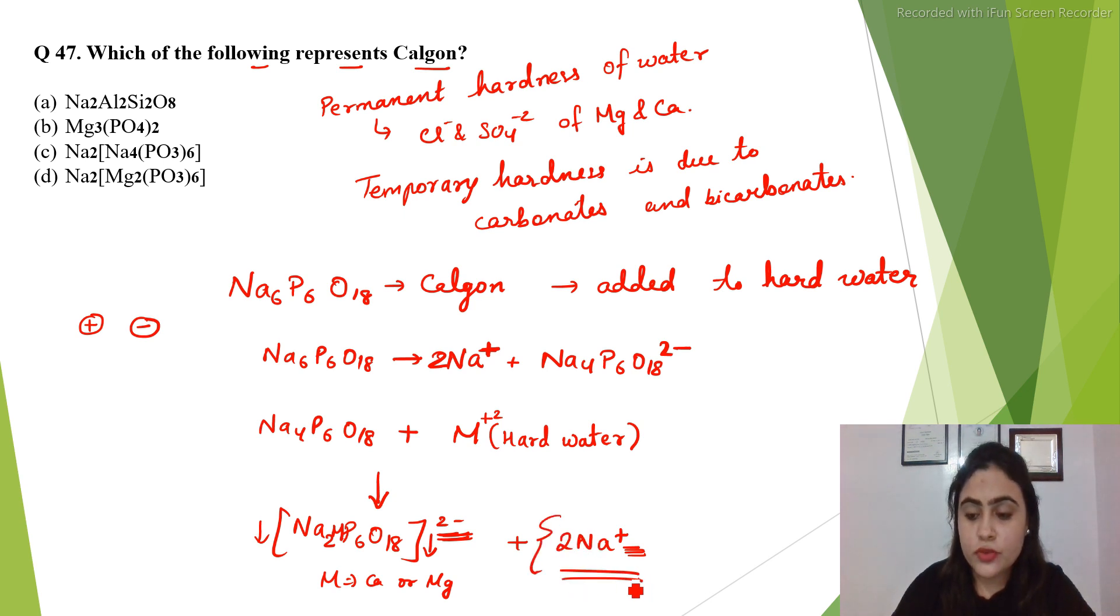Where we have sodium ions. Sodium ions do not contribute to the hardness of water; calcium and magnesium contribute to hardness. The correct compound representing calgon is Na6P6O18, so option C is the correct answer. I hope this has answered your question, thank you.